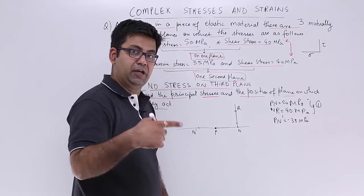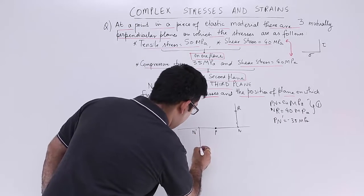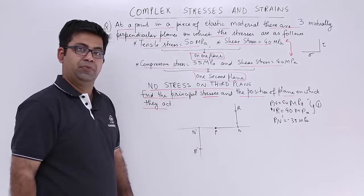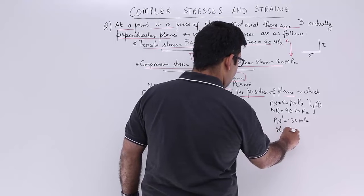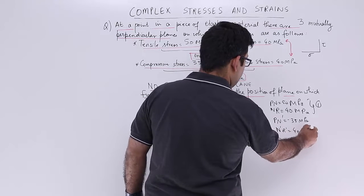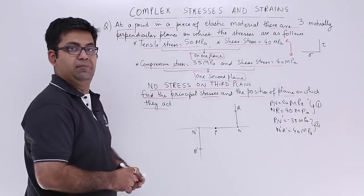And the shear stress of 40. So this is a complementary shear stress. So this would go down like this, 40. This is r dash. So n dash r dash is equal to 40 MPa. So this is the second one for the second plane.